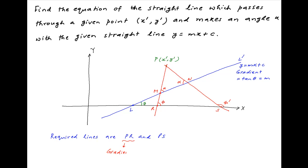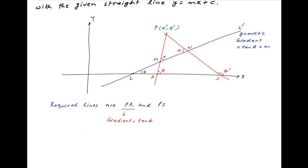The gradient of the line PR is equal to tan phi. Since this line passes through the point P with coordinates x-dash, y-dash, the equation of the line PR is: y minus y-dash upon x minus x-dash is equal to tan phi. Similarly, the gradient of the line PS is equal to tan phi-dash.